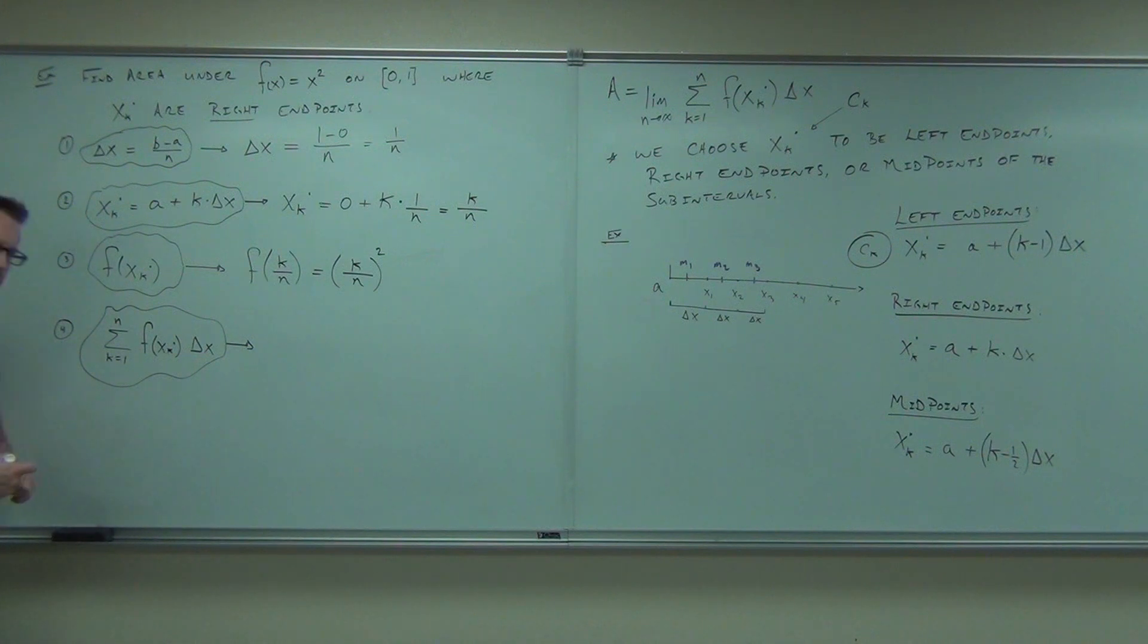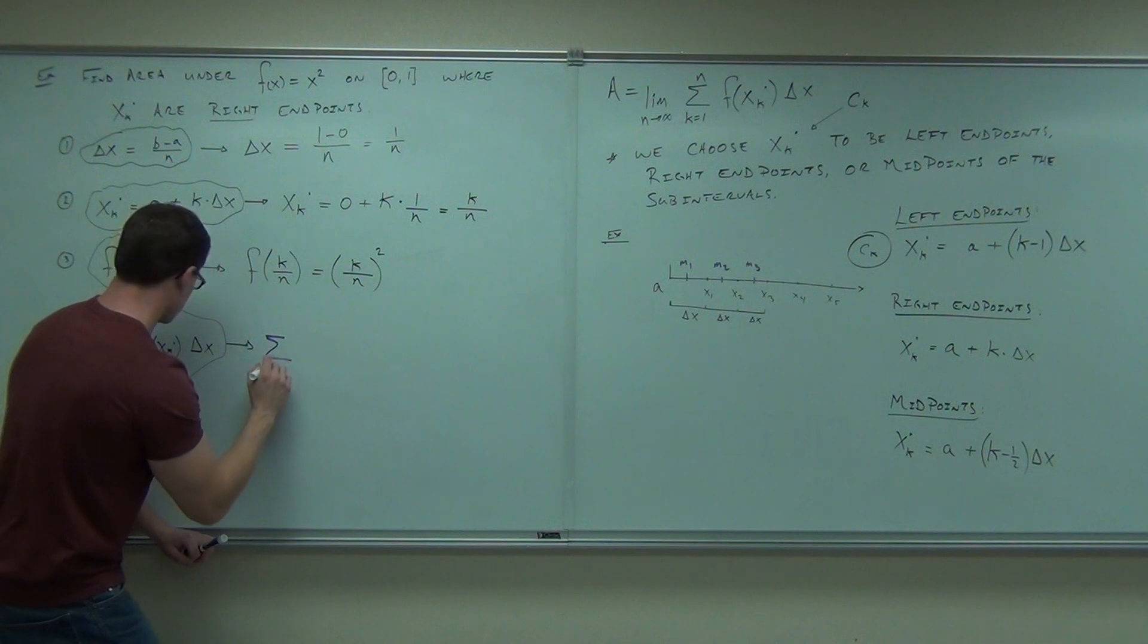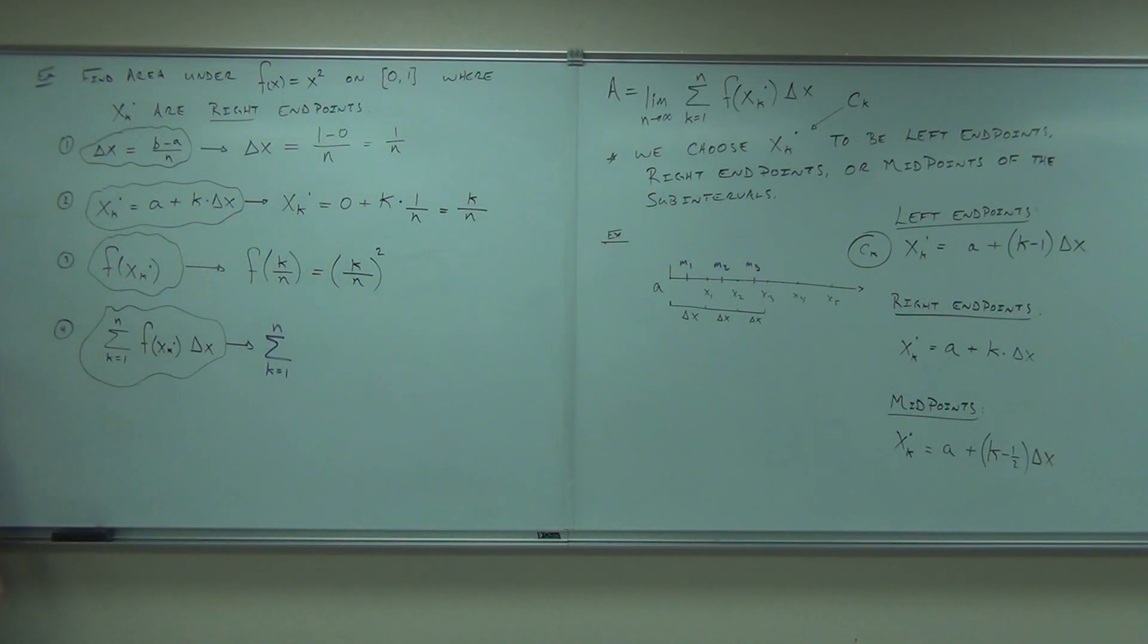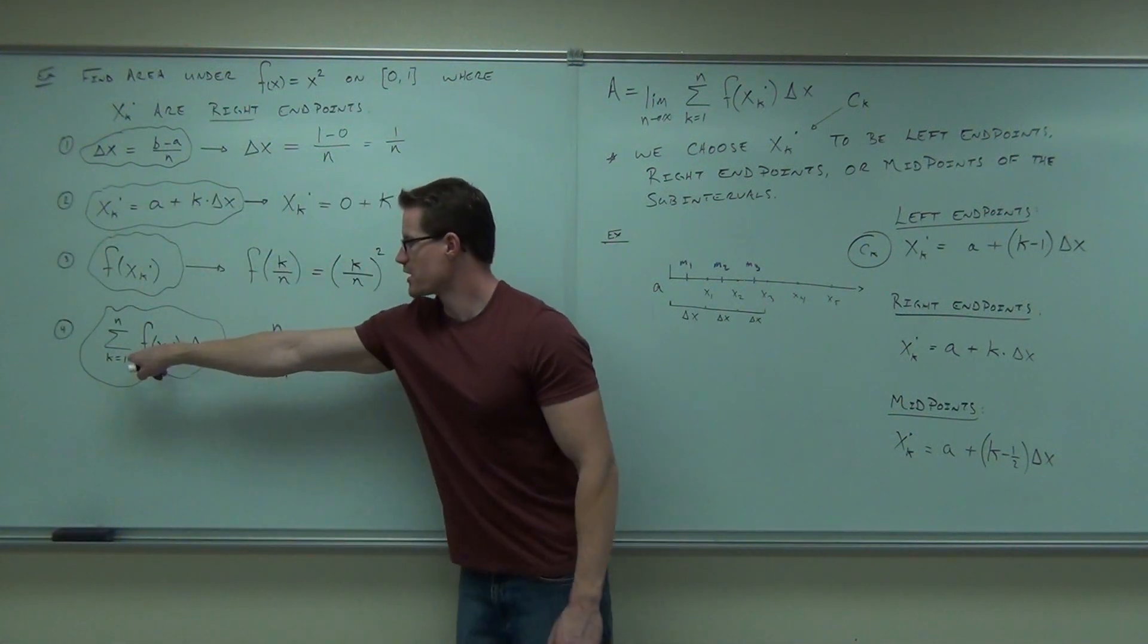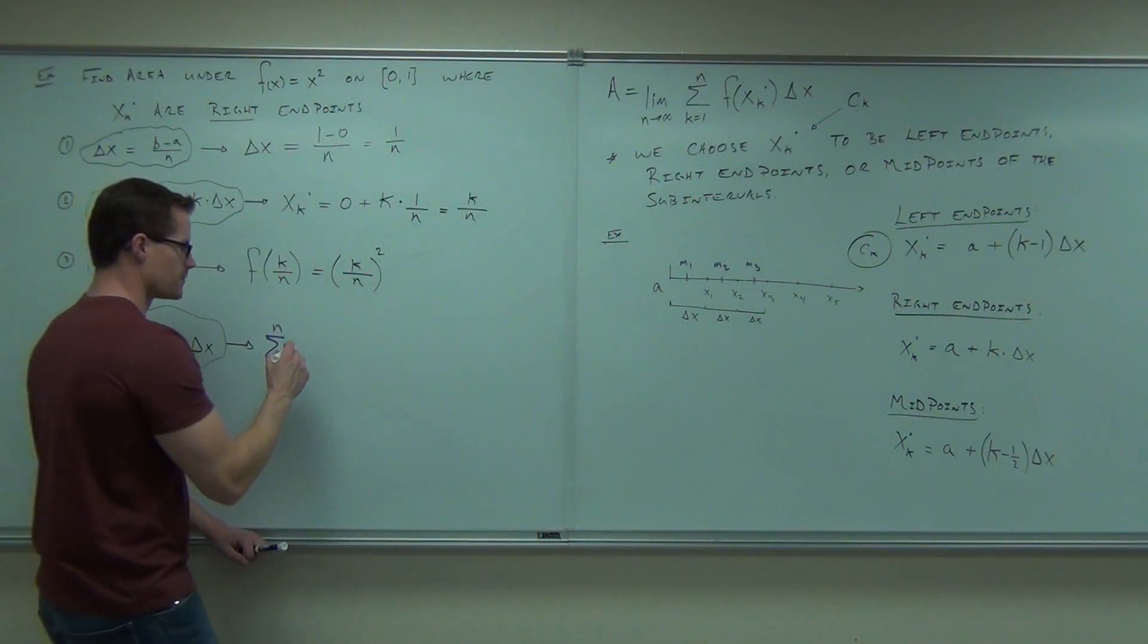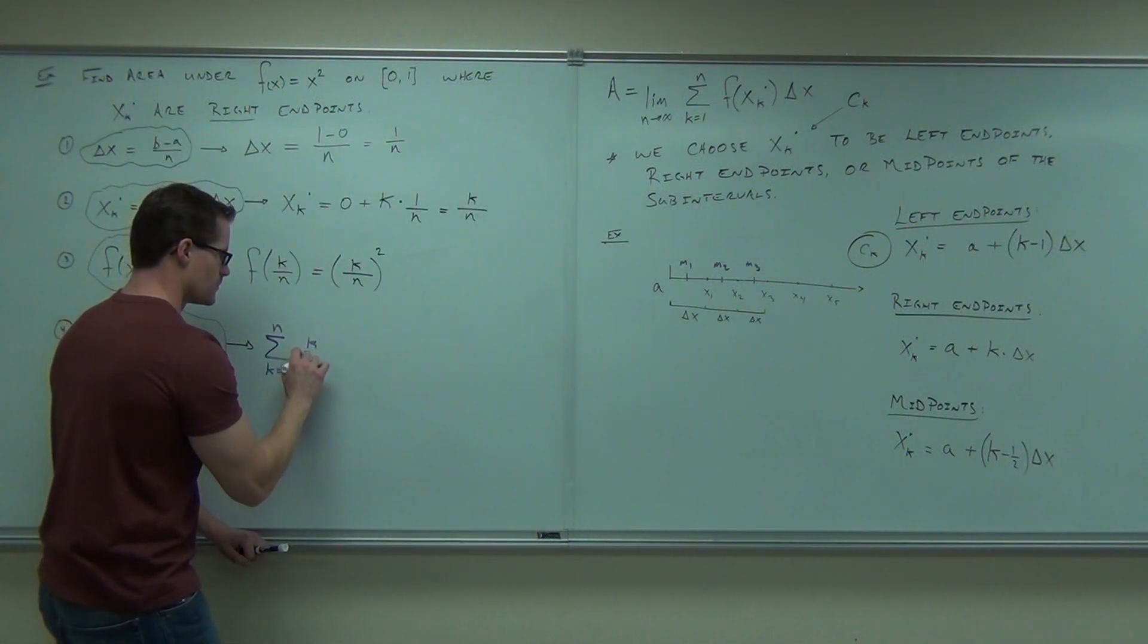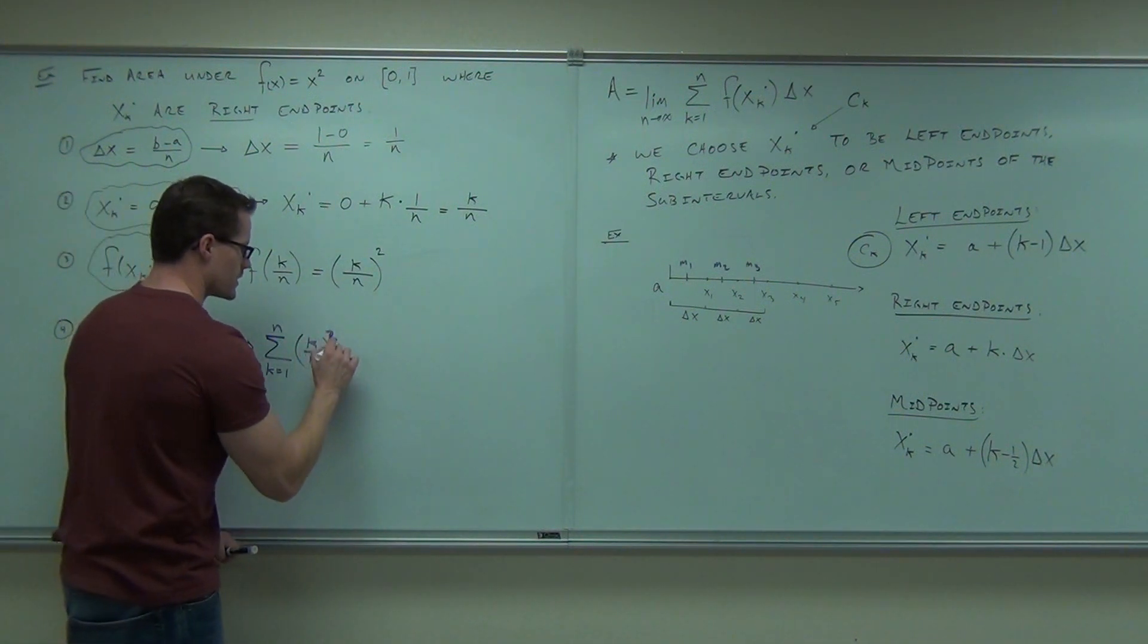Fill this whole thing out. If you fill that whole thing out, you can't change the sum. However, you do have expressions for this and for this. What did we find out was our f of x_k? All said and done, what was it? k over n. K over n what? Squared. And we also should have an expression for our delta x. What was our expression for delta x? One over n.